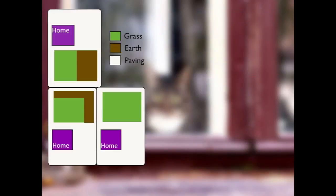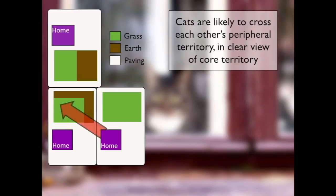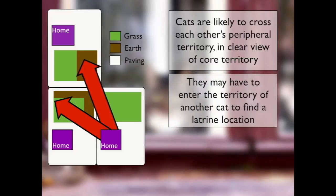This raises a number of problems. Firstly, cats are likely to cross each other's territory in clear view of core territory in order to get from one location to another — which is completely unusual for cats, who would not normally encounter or see unfamiliar cats while in their own core territory. Their peripheral territory shouldn't generally be invaded by other cats. Secondly, it's quite common in domestic settings for a home not to provide suitable earth for a cat to dig in to create a latrine, so cats often have to leave their own garden to find a latrine location in another cat's territory. Both of these situations increase the risk of conflict.